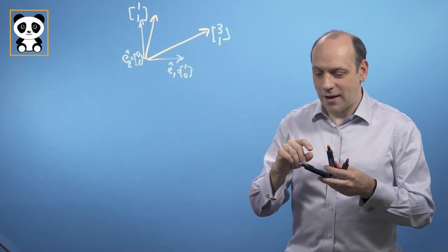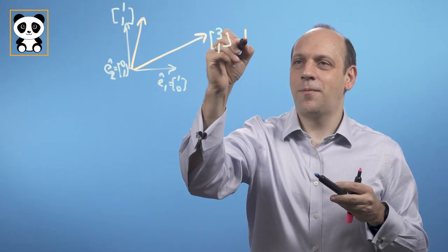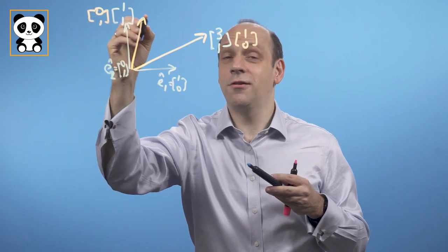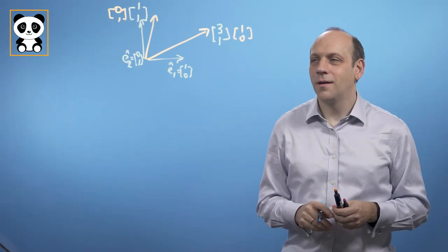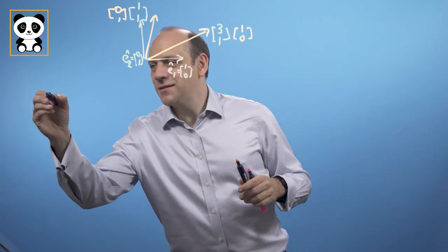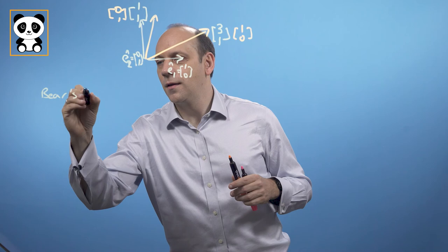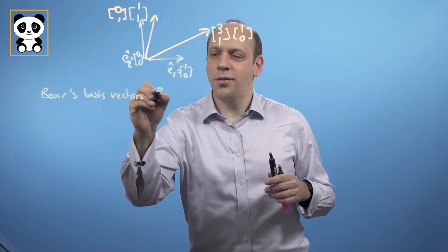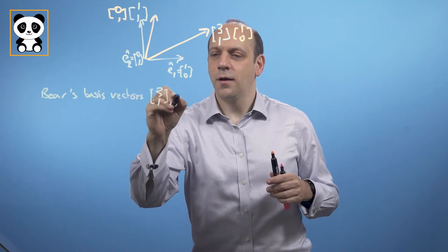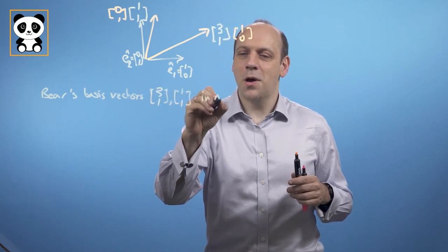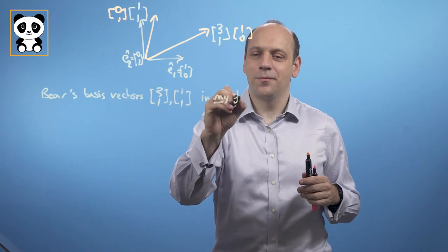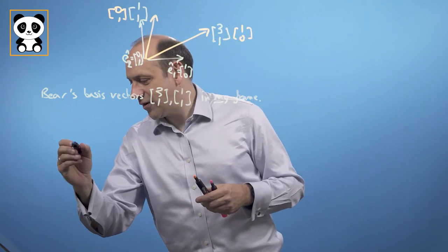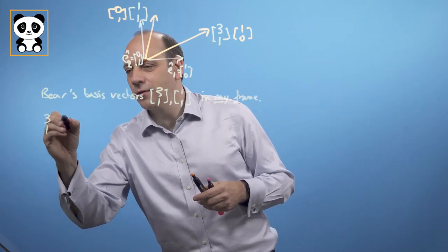Panda's first basis vector is his 1,0, and the second one is 0,1 in Panda's world. Bear's basis vectors are 3,1 and 1,1 in my blue frame. So I can write down Bear's transformation matrix as the matrix with columns 3,1 and 1,1.